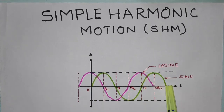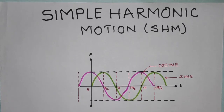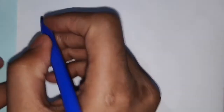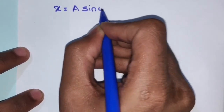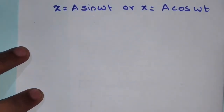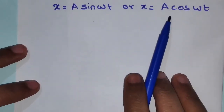Here the green color is the sine function and the pink color is the cosine function. The simplest form of periodic motion is called simple harmonic motion, and the best example is reciprocating motion. The SHM can be expressed by the equations x = a·sin(ωt) or x = a·cos(ωt), where the first applies when taking harmonic motion as a sine function and the second when taking it as a cosine function.